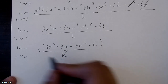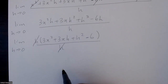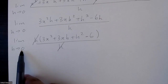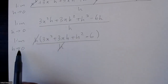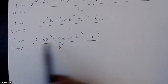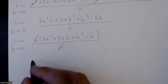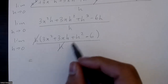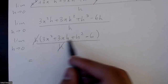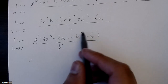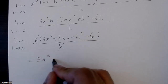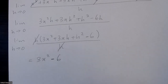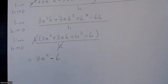The h in the numerator and the h in the denominator cancel off. Then you can substitute zero in for h — that's when you apply the limit. Everything with h turns to zero, so you're left with 3x² − 6, which is the derivative of the original function.